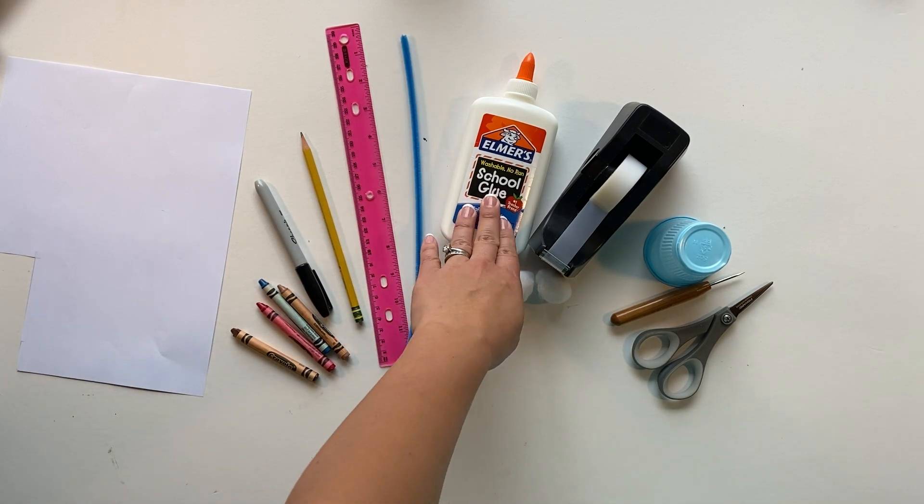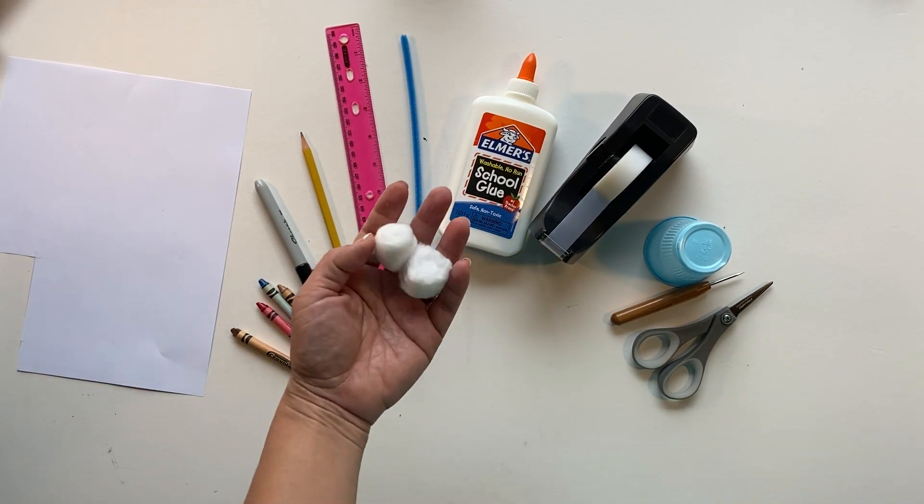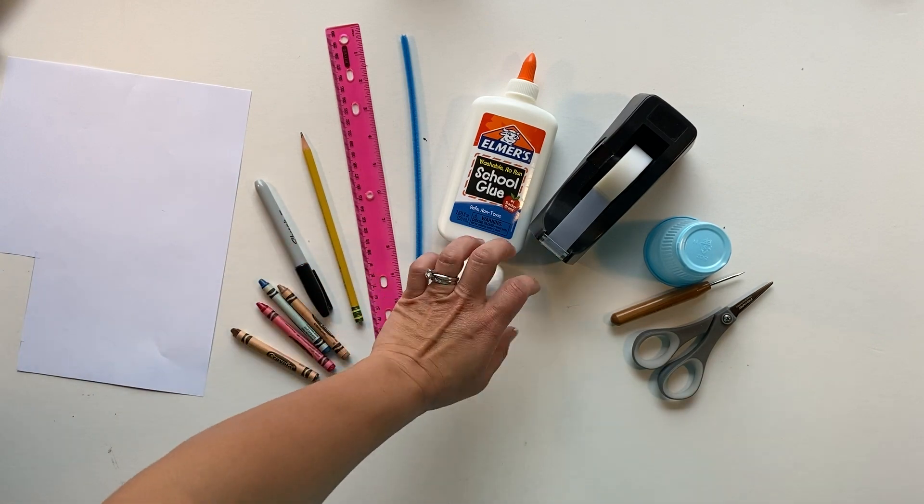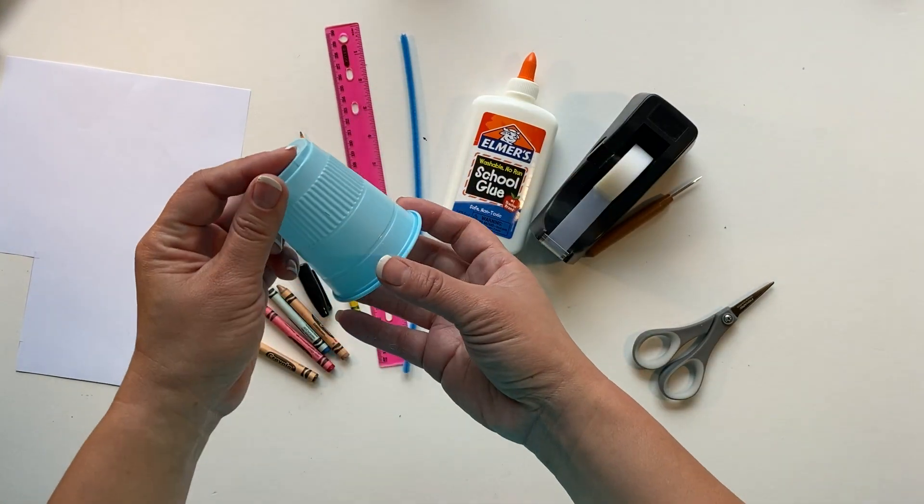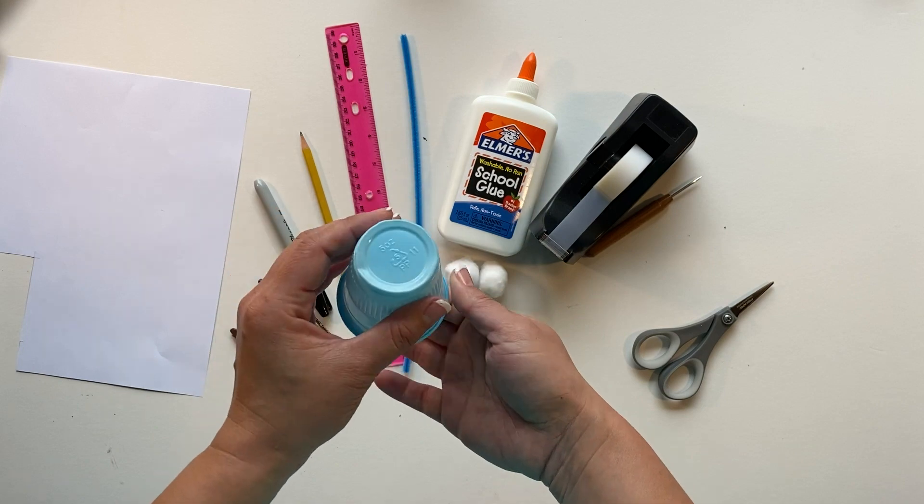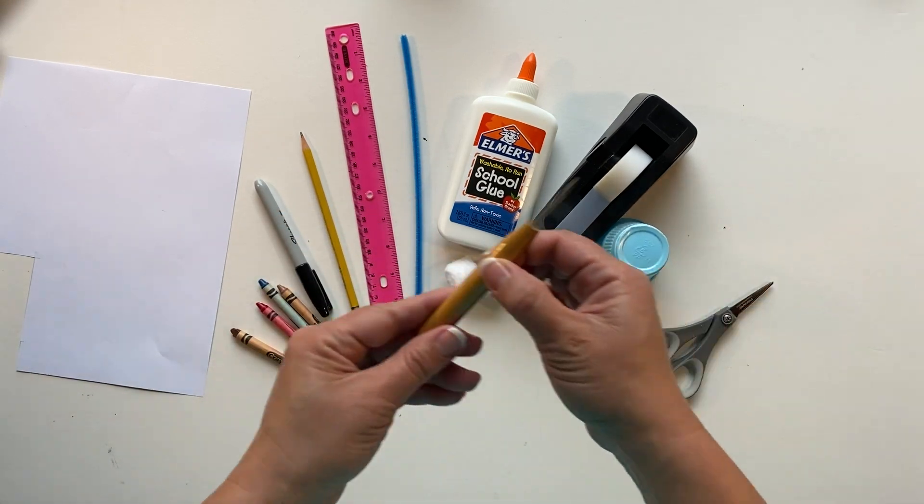We'll need a pipe cleaner, glue, some tape, some cotton balls, and a cup. I have a blue cup and it's smaller than your average drinking cup, and something to poke the cup with.